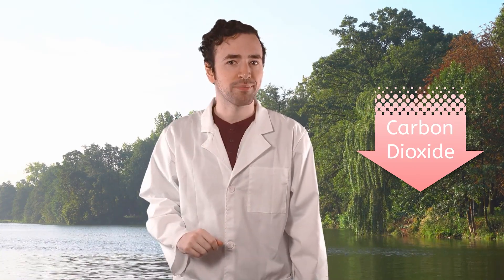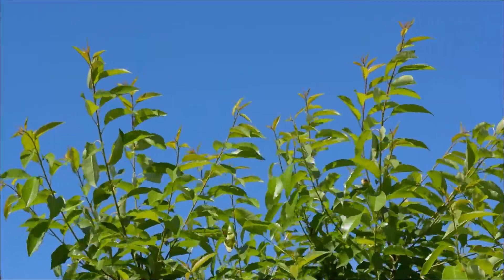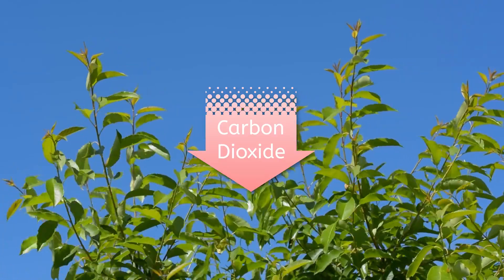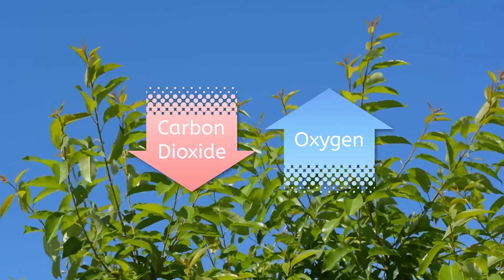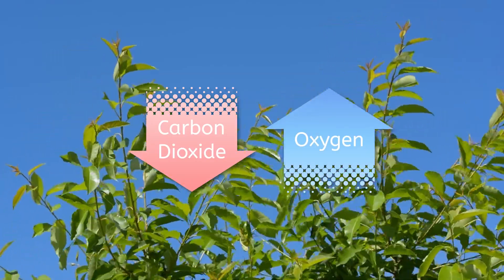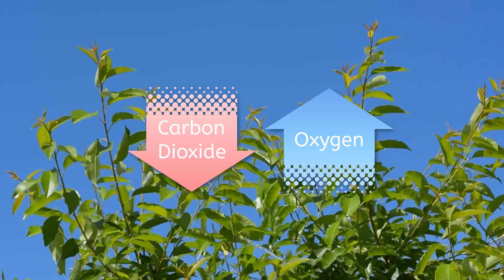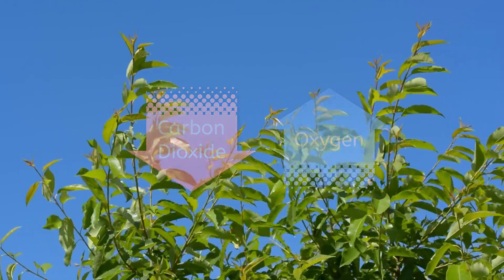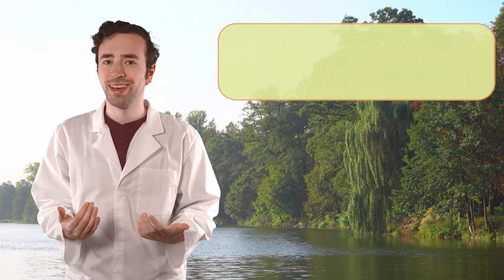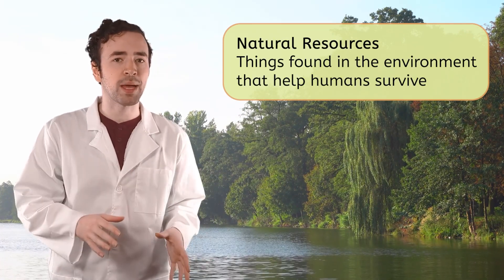Now we've seen how plants reproduce, grow, and respond to their environment, but we're still missing one characteristic of living things — how do plants breathe? When humans and animals breathe in, we take in oxygen from the air, and when we breathe out, we release carbon dioxide. Leaves absorb carbon dioxide from the air, and after plants create sugar, they release oxygen back into the air. This does the earth a huge favor, because breathing in too much carbon dioxide is harmful, and all animals need oxygen to survive. Plants help to replenish that resource for us. Natural resources are things found in the environment that humans did not make, but we can use to survive.